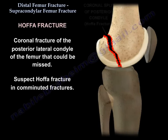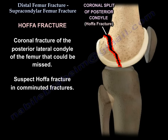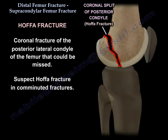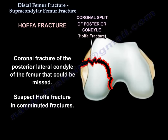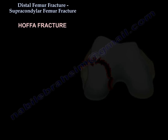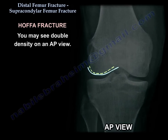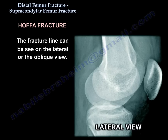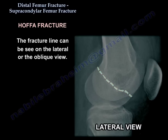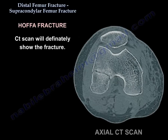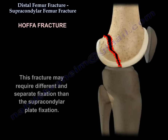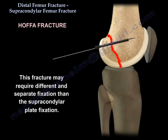A Hoffa fracture is a coronal fracture of the lateral condyle of the femur, and the fracture can be missed. Suspect a Hoffa fracture in comminuted fractures of the distal femur. You may see a double density on the AP view. The fracture line can be seen on the lateral or oblique view. CT scan will definitely show the fracture. This fracture may require different and separate fixation than the supracondylar plate fixation.